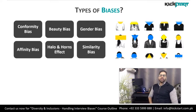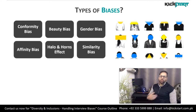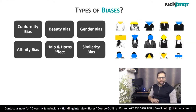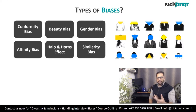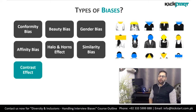Then there is the similarity bias. Naturally, we like to surround ourselves with people who are similar to us — who have the same likes and dislikes, who talk like us, who look like us. This is categorized as the similarity bias, which is also very common and is usually applied unconsciously, so you have to be very careful about it.